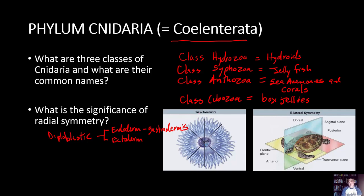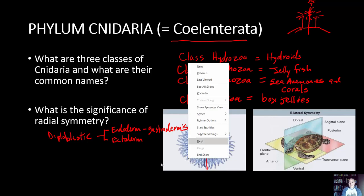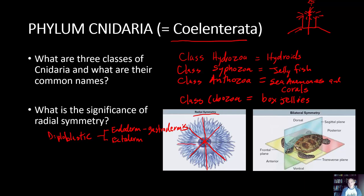Looking at the difference between radial and bilateral symmetry: a sea anemone is typically attached at the base, with the mouth at the top. If we look at the main long axis from above and slice the animal through several planes, we get the same image on both sides of each cut — that's radial symmetry.